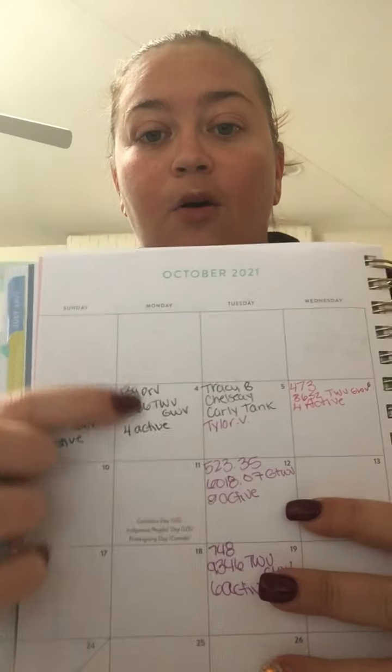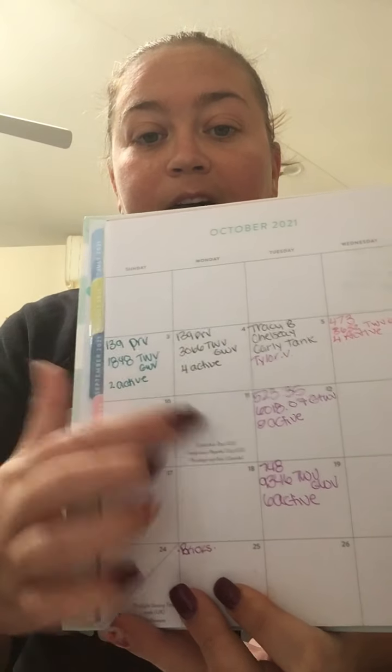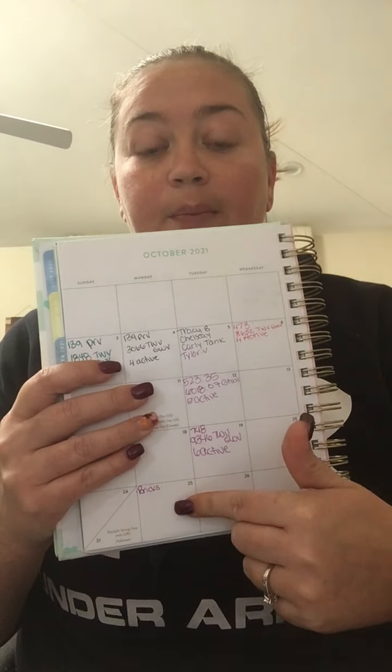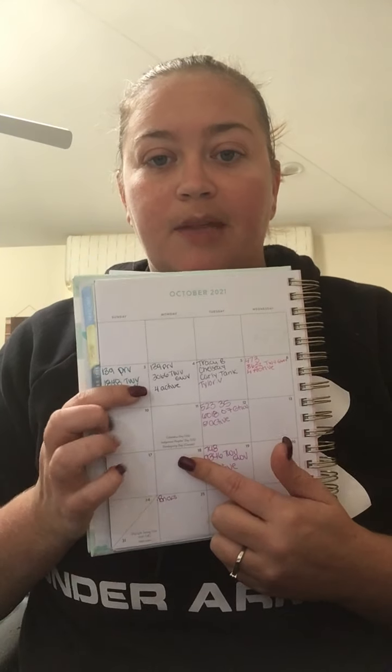I also put when big ticket items come out — I totally forgot to do that this month on here. So if there's a big release, we know our big releases happen on Mondays. For instance, we know next Monday is bricks, so I would put that on there. That way when my GWV jumps from Sunday to Monday, and there's a big jump in PRV and sales throughout the whole group team, I know it's because the bricks came out. I should have done the same thing for villains and stuff like that, but I forgot.